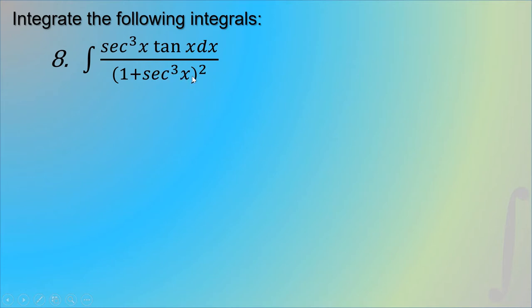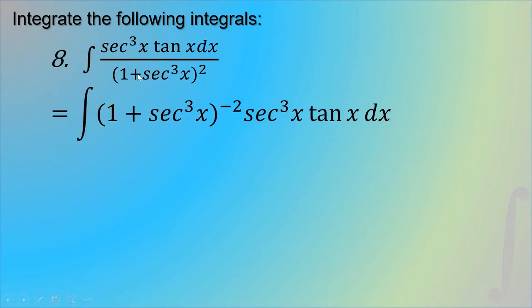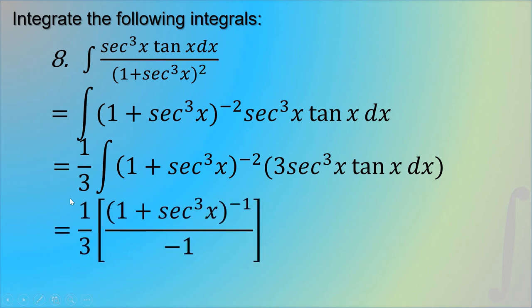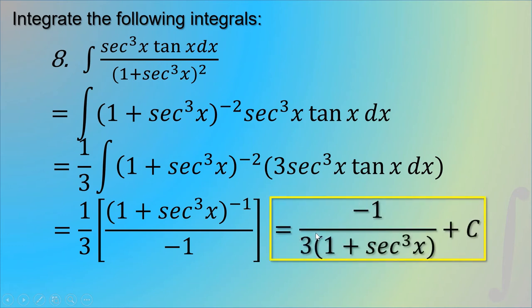The eighth example: integrate sec³x times tan x dx, all over (1 plus sec³x)². We move the denominator to the numerator with a negative exponent of 2. Differentiating (1 plus sec³x) gives 3 sec³x times tan x dx, so we need a factor of 3 inside and balance with 1/3 outside. Applying the power rule, the answer is negative 1 over 3(1 plus sec³x) plus c. That concludes the first part of the fundamental integration formulas. For questions, comment in the discussion section on Schoology.